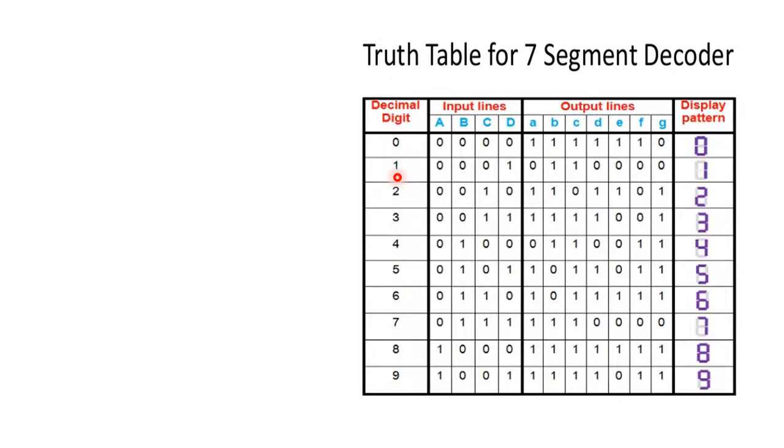Similarly, when we want to display 1, you can see B and C should be 1 and remaining all elements are 0. So on when displaying 2, 3, 4, 5, 6, 7, consecutively either of the segments is going to be off or on.